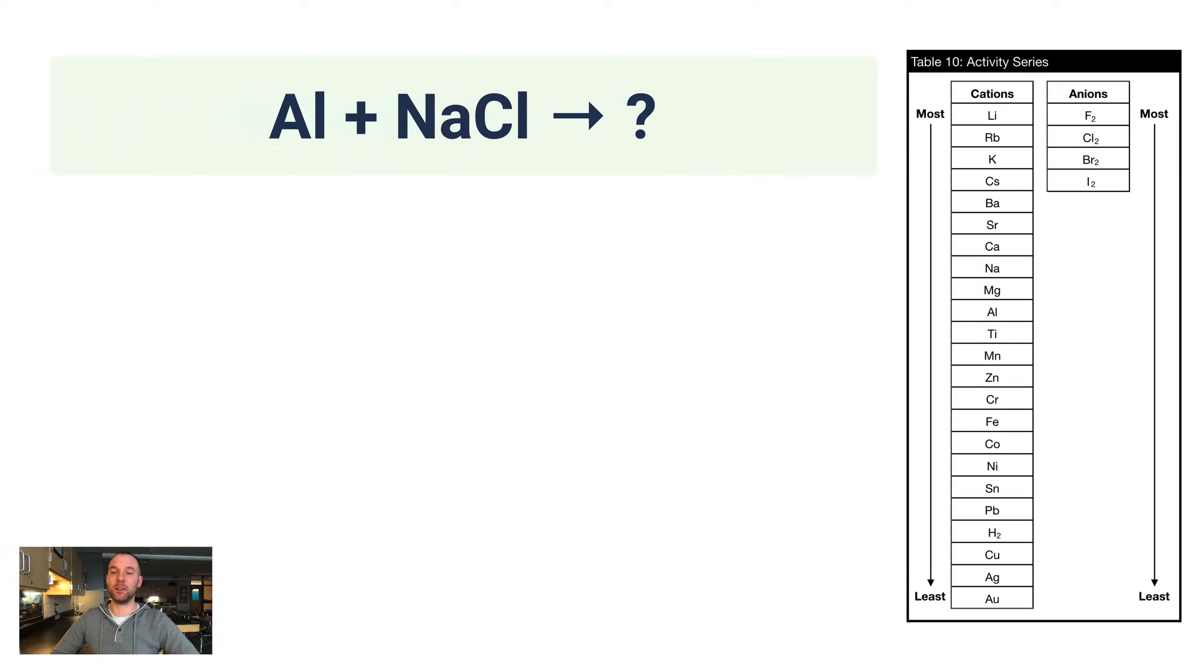Now, let's take a look at that activity series. So this is the activity series here. Cations, which are almost exclusively metals, the only exception being hydrogen here, are listed on the left side, and this left side is meant to be read completely independently of the right side, which just lists anions, and if you'll notice, there's just the halogens here: F, Cl, Br, and I. Now, the higher up on this list you are, the more reactive you are. The lower down on the list, the least reactive you are. At the top, you'll see lithium is the most reactive metal. At the bottom, gold is the least reactive metal.